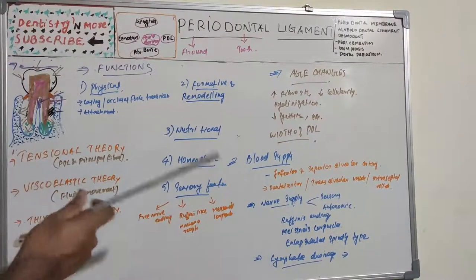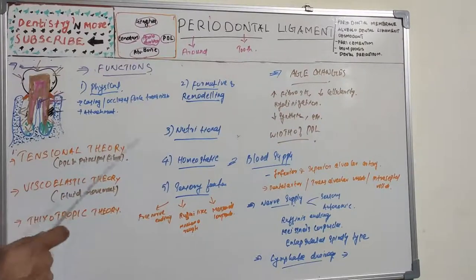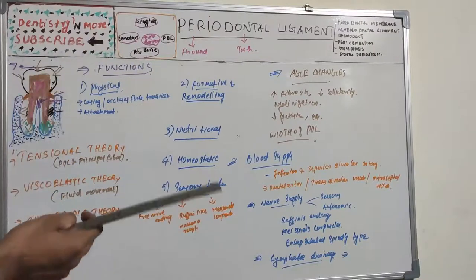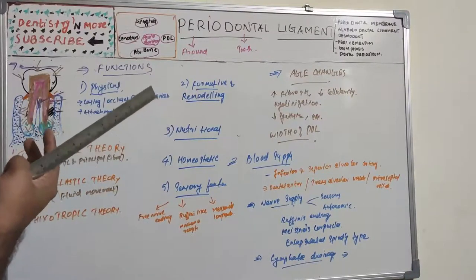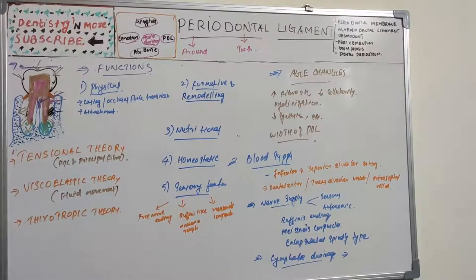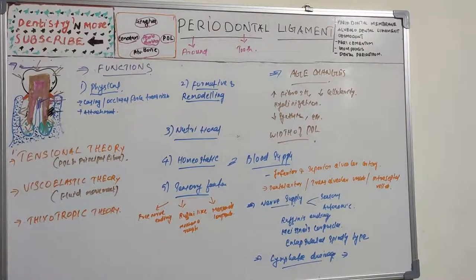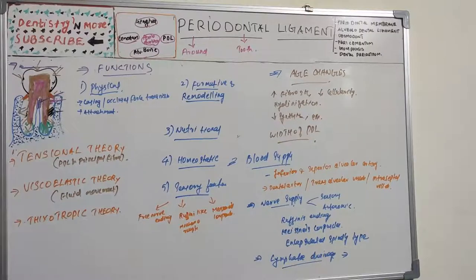Age changes in the periodontal ligament include: increased collagen fibrosis and decreased cellularity, areas of hyalinization, sporadic mineralization of fibers, decrease in number of periodontal fibers, formation of multinucleated fibroblasts, decreased collagen synthesis, irregular and uneven alveolar bone surfaces, replacement of some PDL space by fat cells, and a narrower PDL space in non-functioning teeth. With increasing age, fewer teeth are present and the remaining teeth may show increased PDL width due to greater functional load.